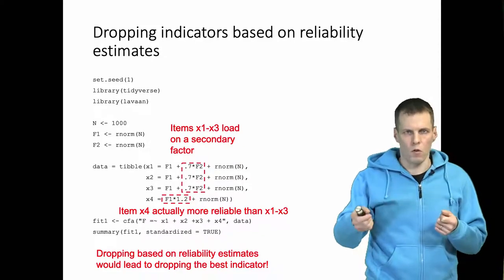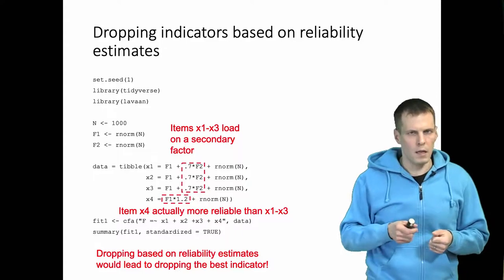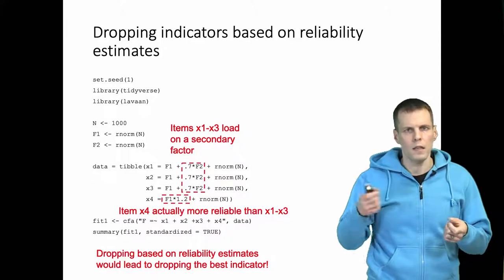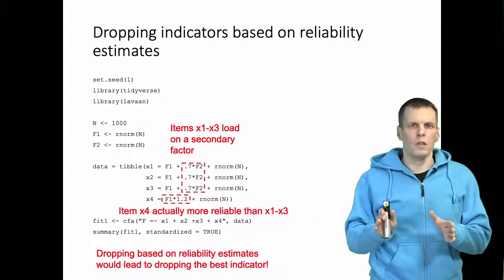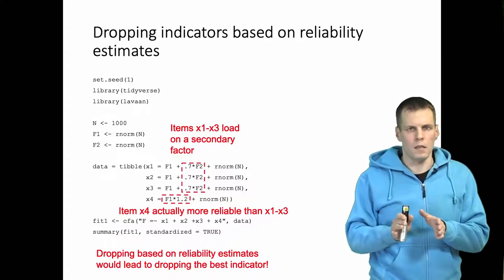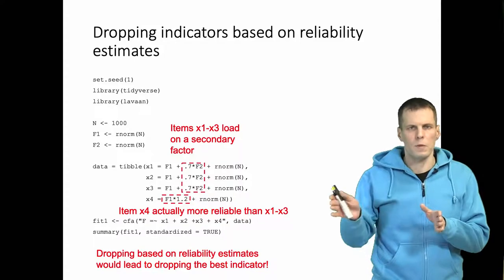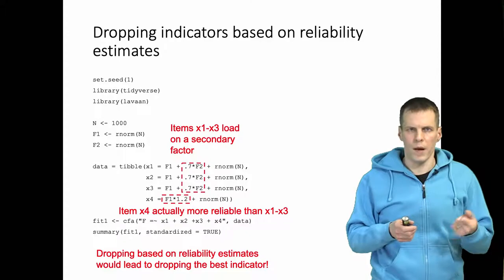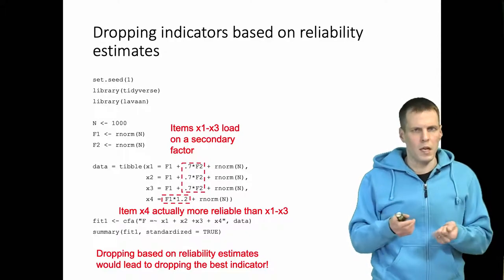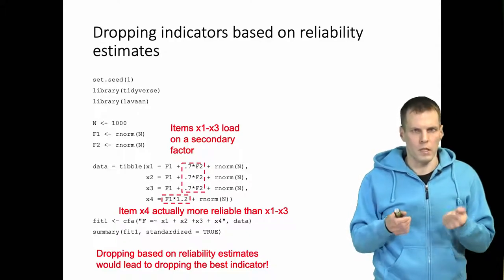If you do scale scores after factor analysis, then things are a bit different. In that case, if you have extremely small reliability and if you know that that reliability is not just because of misspecification, then in some scenarios you would be better off dropping the item. But in most cases you should keep all the items in the model.